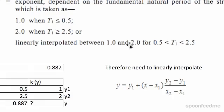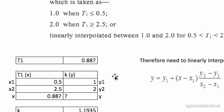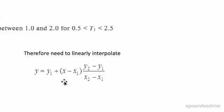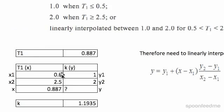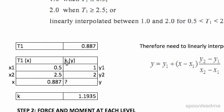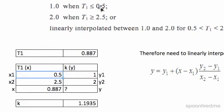A simple formula for linear interpolation is shown here. I've created a table to make it easier, with T1 and k as the headings. k is what we're solving for, which we call y according to this formula, and T1 is x - everything we're subbing in. I've put in T1 is 0.5 when k is 1, and T1 is 2.5 when k is 2.